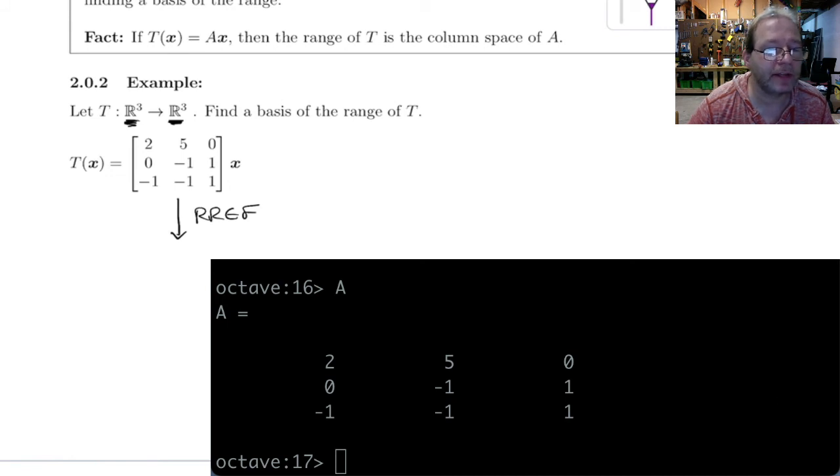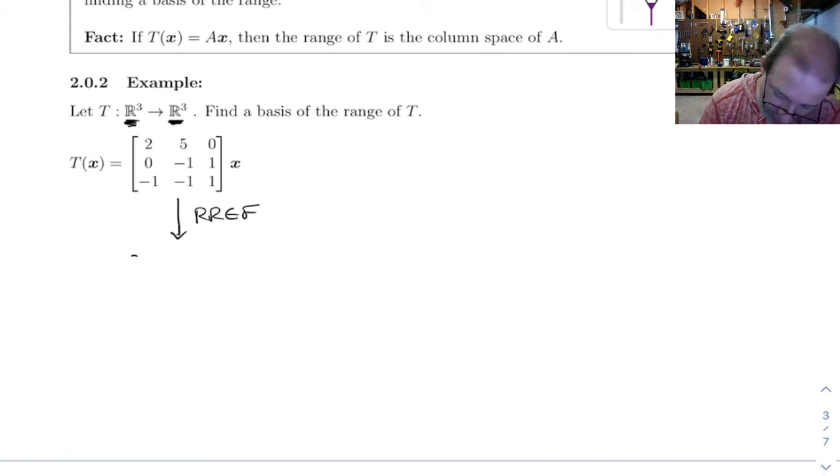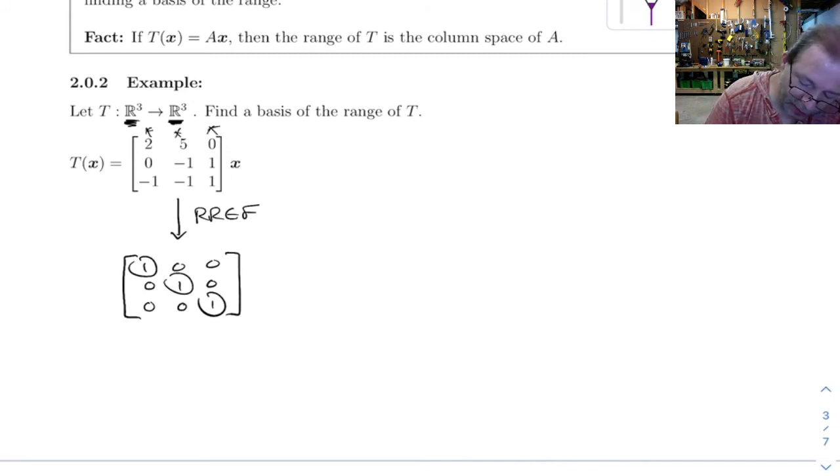Two, five, zero. Yeah, that's it. So if I row reduce this, it gives me an identity matrix. So it row reduces to this. We've got a leading one in every column. That means we've got to hang on to all three columns as our basis of the column space or range.